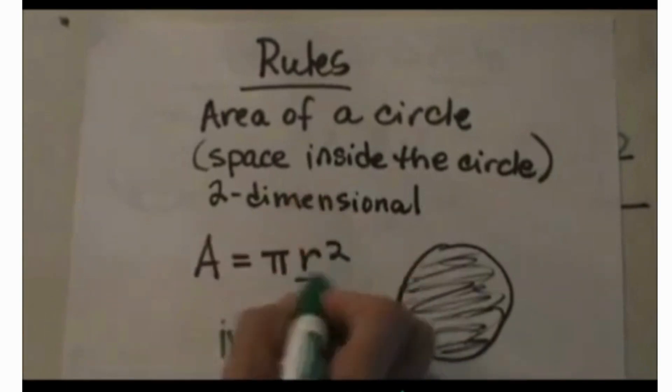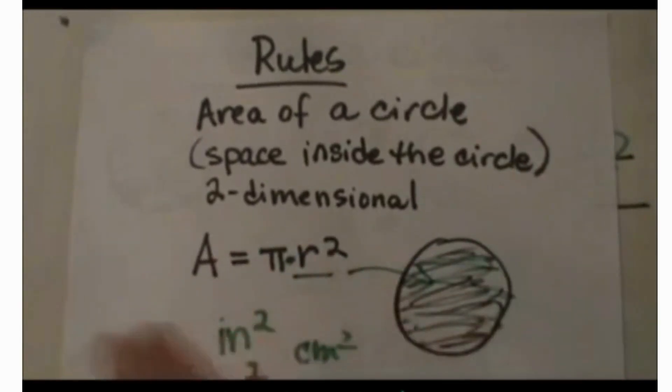You always square before you multiply. Square it then multiply by pi. That is the inside area of a circle.